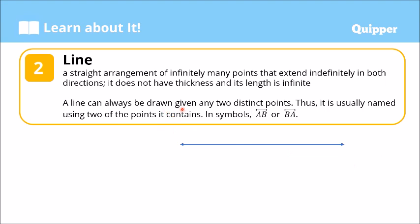A line can always be drawn given any two distinct points, and is usually named using two of the points it contains. We have here two points on this line: Point A and Point B, so we can name this line as Line AB or Line BA. Given two distinct points, one can always form a line by connecting them — joining points A and B forms Line AB.